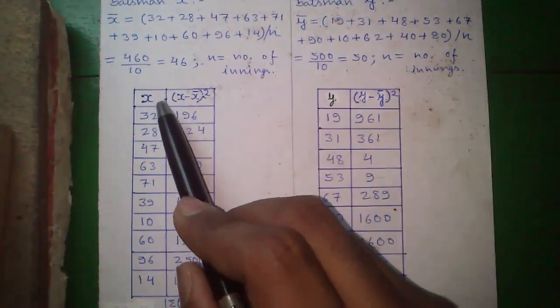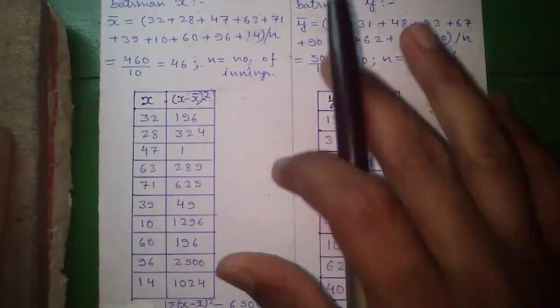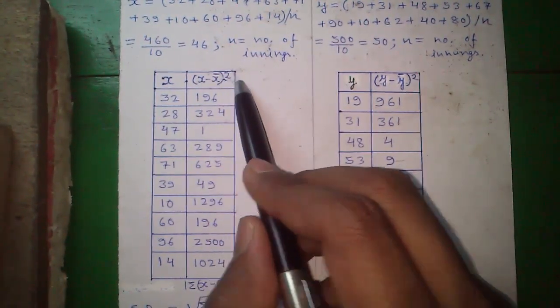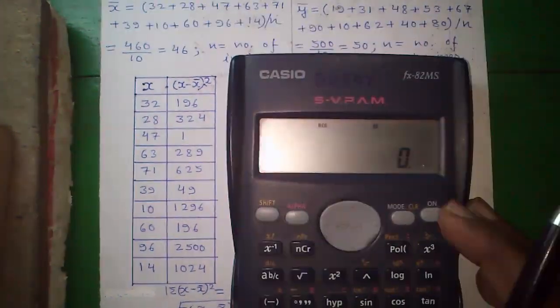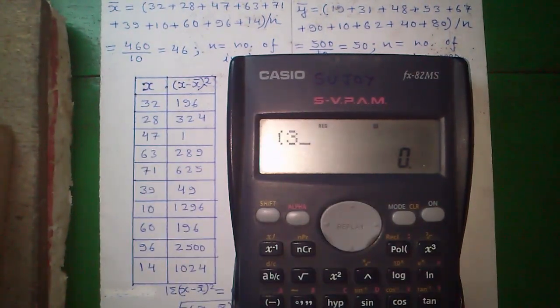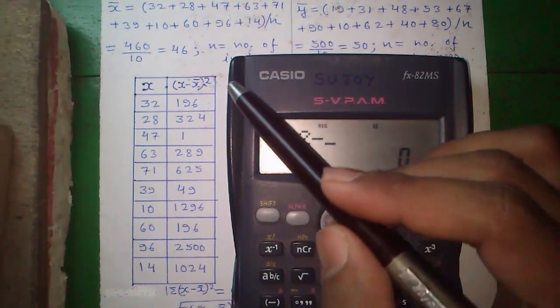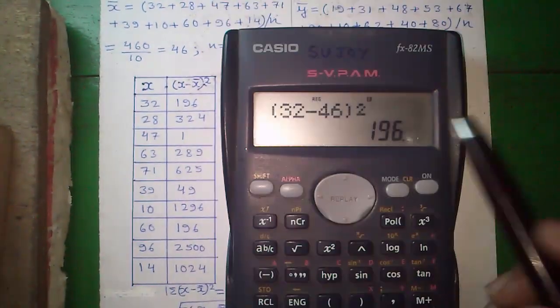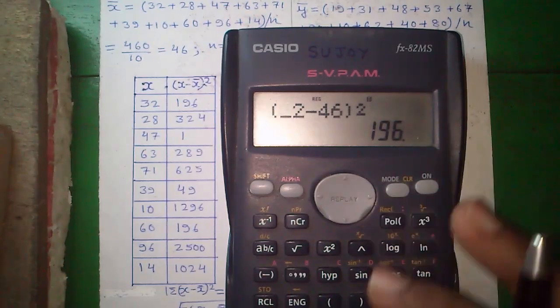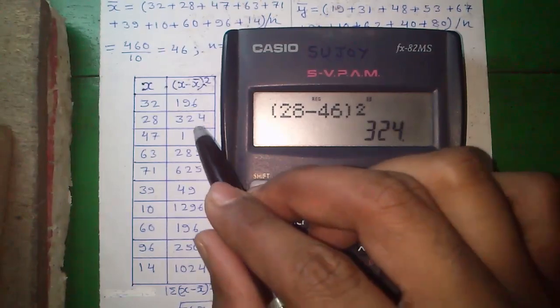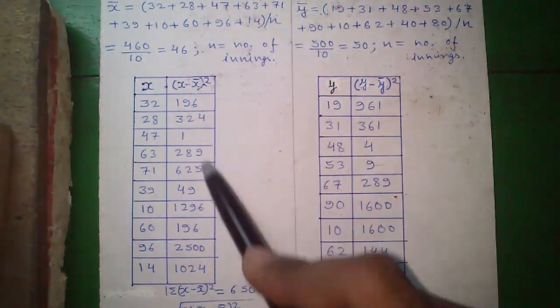Next, construct the table. Write all X values vertically column wise. Construct the second column which is X minus X bar whole square. I will show you, X is 32 for the first value minus X bar 46 whole square and press equals to, that is 196. Next, 28 minus 46 whole square that is 324. Similarly, construct the whole table.